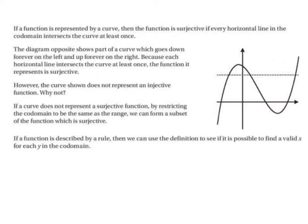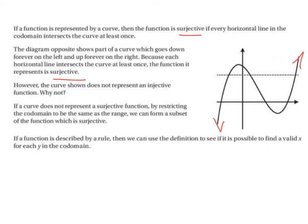A recap on surjective functions: if a function is represented by a curve, then the function is surjective if every horizontal line in the codomain intersects the curve at least once. The diagram opposite shows part of a curve which goes down forever on the left and up forever on the right; because each horizontal line intersects the curve at least once, the function it represents is surjective. But with the graphs of y equals sine of x and y equals cos of x, if we were to go above 1 or below minus 1, our horizontal line would not cut the curve. Therefore, the graphs of y equals sine of x and y equals cos of x are not surjective. And since they are neither surjective nor injective, they are not bijective either.